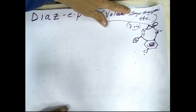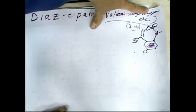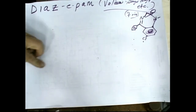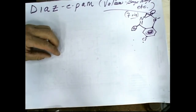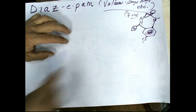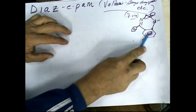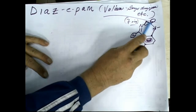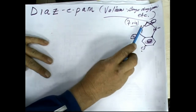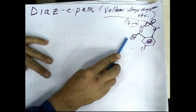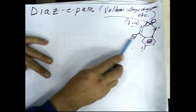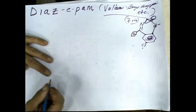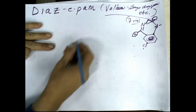Diazepam. Benzodiazepine. So these are Valiums — things to knock you out. Look at the cool atoms in this benzene ring structure. Seven members in here. You've got nitrogens, a benzene ring hanging off, benzene into the ring, a nitrogen in the ring, a double-bonded O out there. Things really happening here.